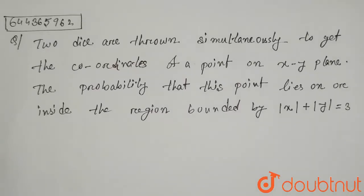Hello everyone, the question is: two dice are thrown simultaneously to get the coordinates of a point on xy plane. The probability that this point lies on or inside the region bounded by |x| + |y| = 3.